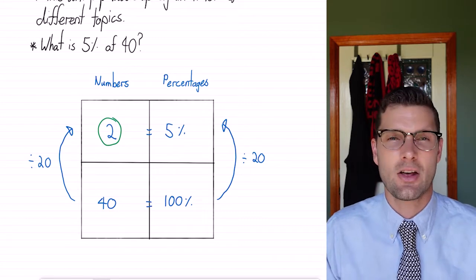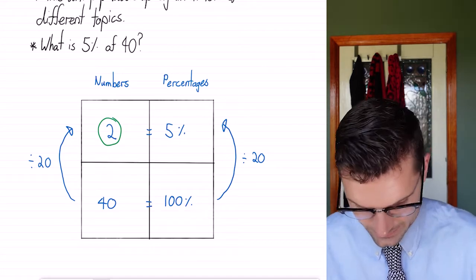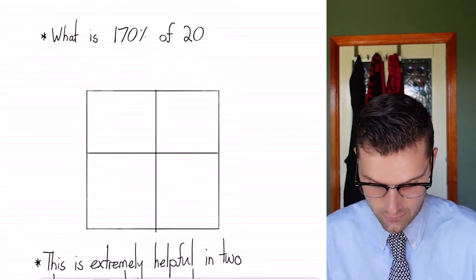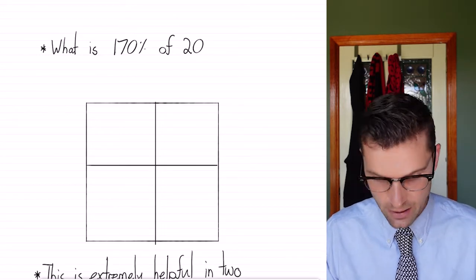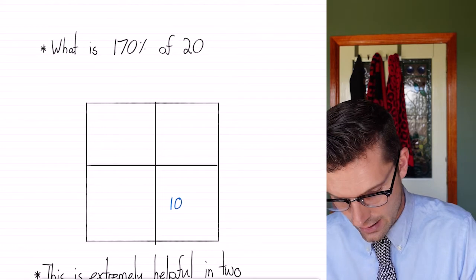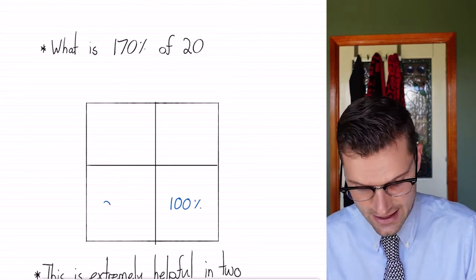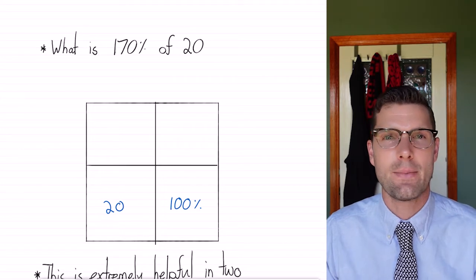We're going to see it in a slightly harder example, but I guarantee you this will be able to help you out at some point. So this time we've got 170% of 20. So we've got to increase our number. So I know that we've been given 100% and that's equal to 20. So the whole of our original number is 20, which is 100%.